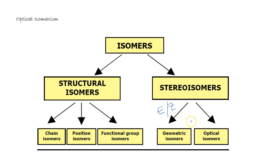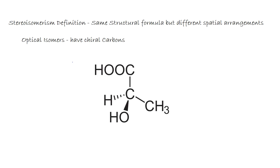This year we'll be looking at Optical Isomers in particular, and these are Isomers with the same molecular formula but different spatial arrangements. Optical Isomers are a type of Stereoisomerism, and remember our definition of Stereoisomerism is something with the same structural formula but different spatial arrangements of its atoms.